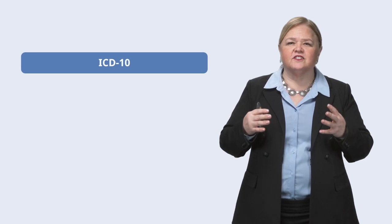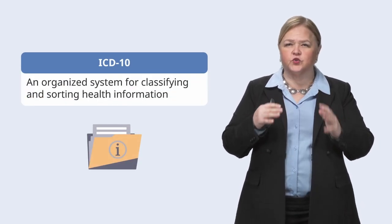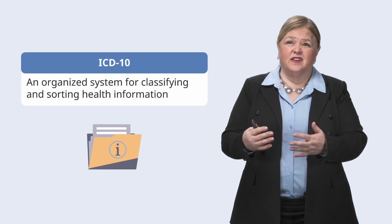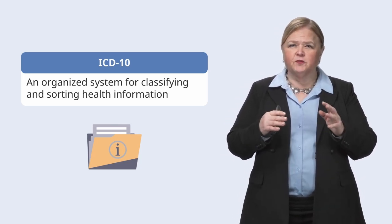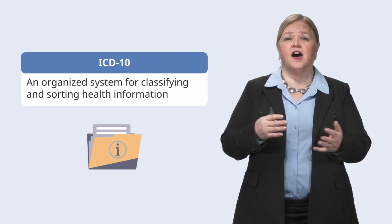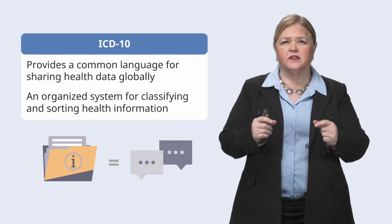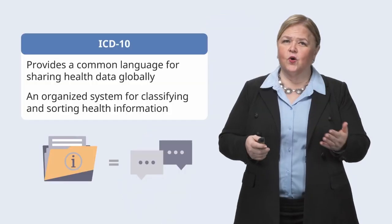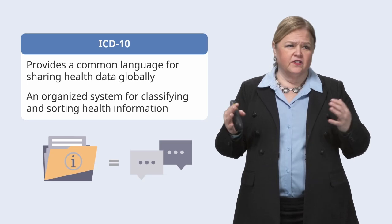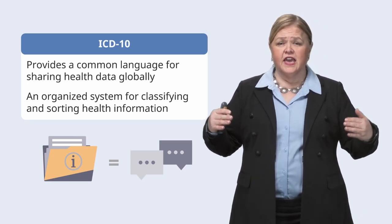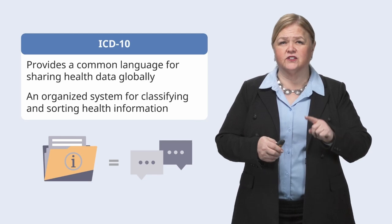Think of the ICD-10 as a super organized system for classifying and sorting information about people's health — why they might get sick or even pass away. Imagine if people from different countries wanted to share information about the health of their populations. The ICD-10 helps them do that by providing a common language. It's like what we did with the INR — the International Normalized Ratio — where we could compare lab values between different labs and different hospitals, all using the same references. That's all the ICD-10 is: taking the different language and things used in different places and bringing it all together with very clear definitions.